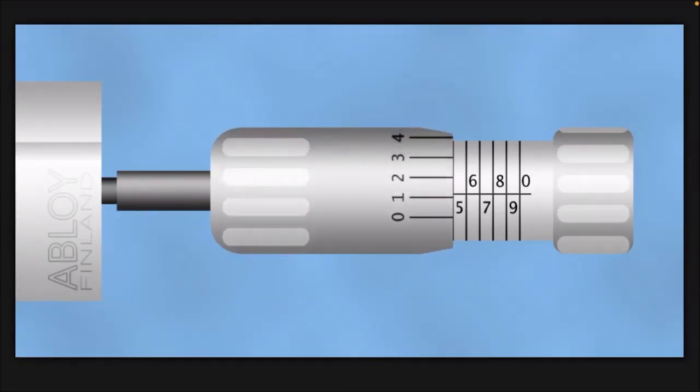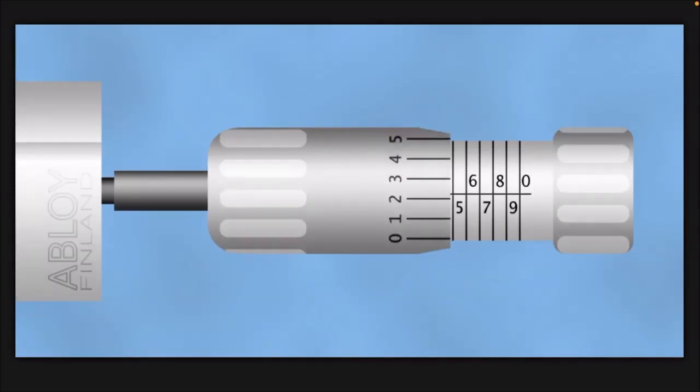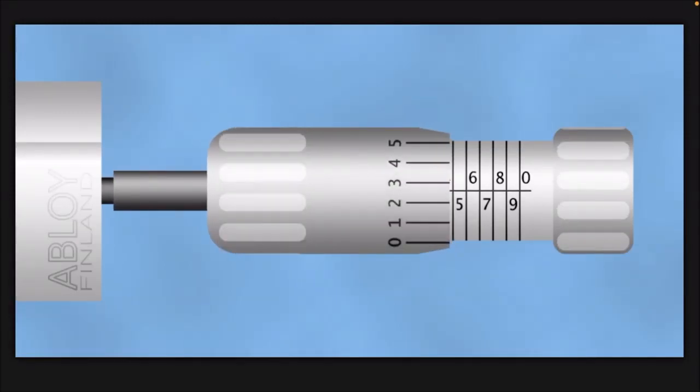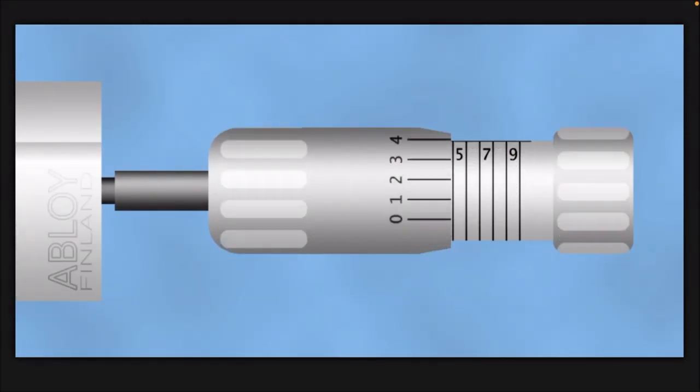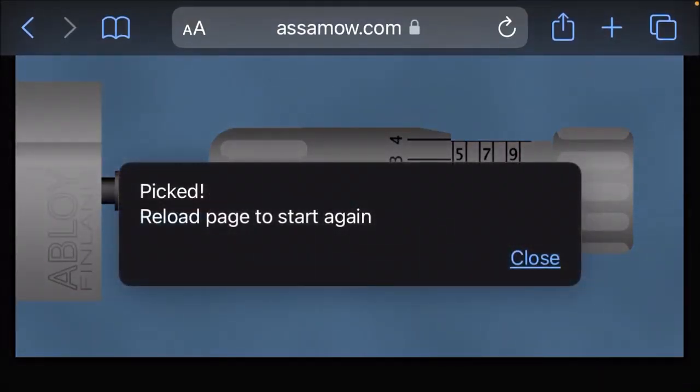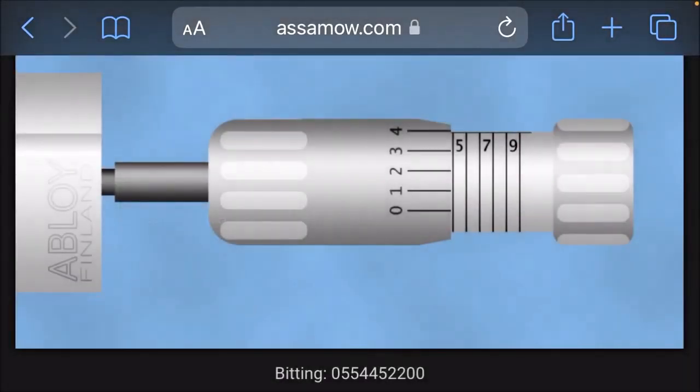Five is binding now. Move five. Still binding. Still binding. Oh, there we go. Got the lock picked. Okay, I hope that little tutorial was helpful. And thanks for watching.